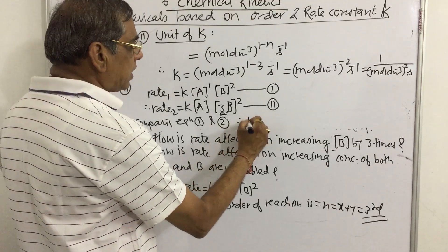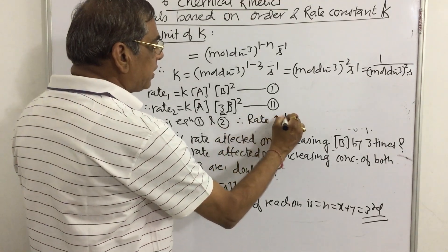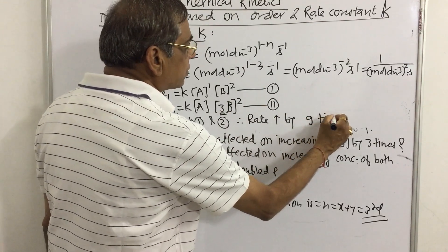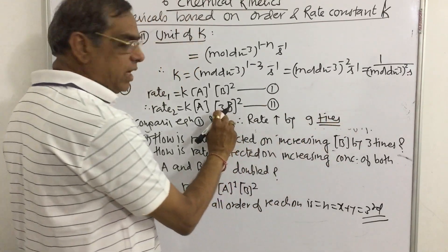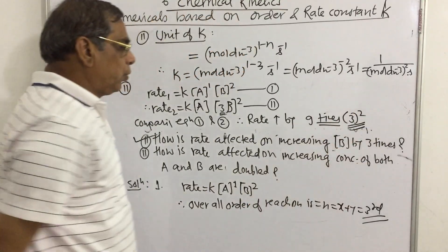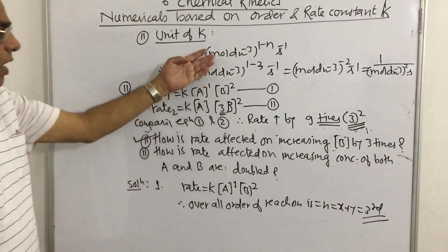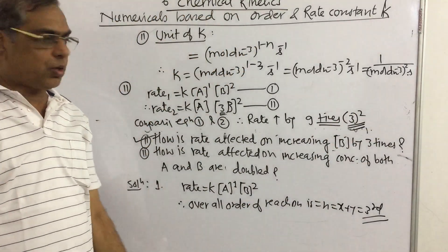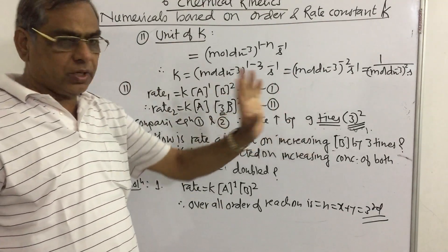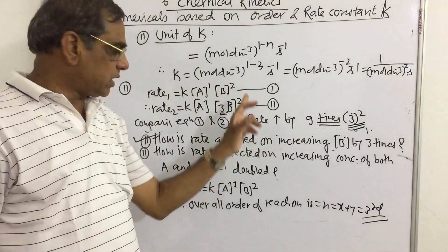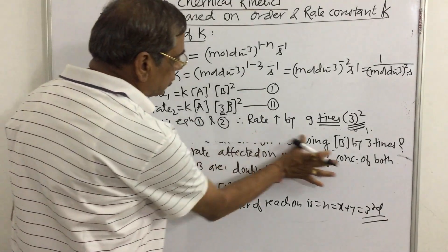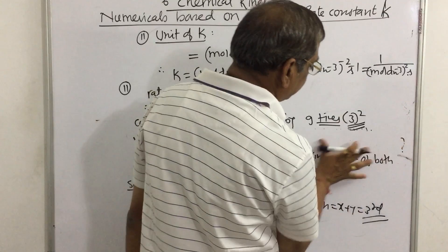That is, the rate increases by 9 times, since 3 raised to the power 2 equals 9. So for MCQs, this can be solved directly without full working. Next question is given.